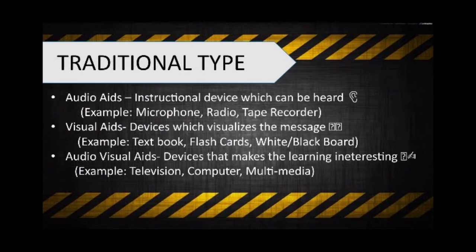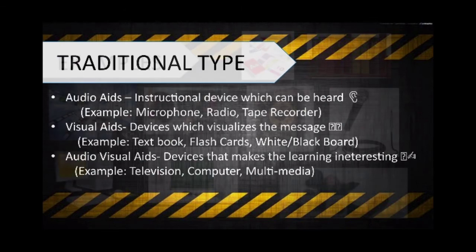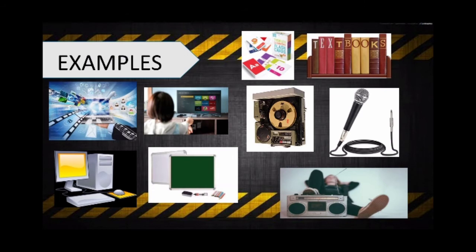The traditional type also has three sub-types. Audio aids are instructional devices through which the message can only be heard. Visual aids are used in the classroom to encourage learning and make it easier and motivating. Lastly, audiovisual aids are those devices which are used to encourage the teaching-learning process and make it easier, interesting, effective, more concrete, realistic, and dynamic. Examples of the traditional type include microphone, radio, tape recorder, textbook, flashcards, white or blackboard, television, computer, and multimedia.